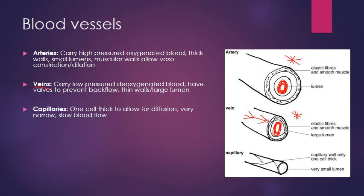Capillaries are the smallest blood vessels, found either in the lungs near the alveoli or near muscle fibres, both locations allowing for diffusion and gaseous exchange. They are one cell thick, which enables diffusion to occur. They are very narrow, producing a slow blood flow — this is deliberate, as it allows time for oxygen and carbon dioxide molecules to diffuse through the capillary walls.